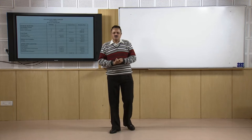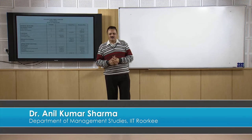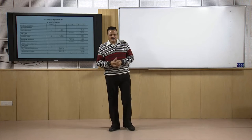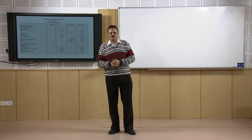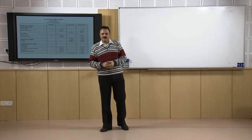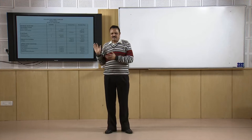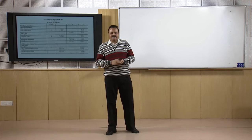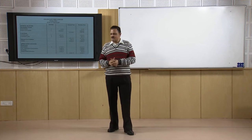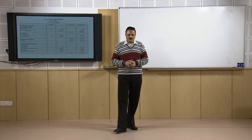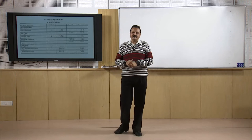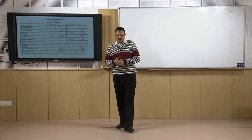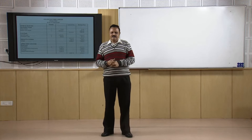Welcome students. In my previous lecture, we were talking about ratio analysis — analyzing financial statements with the help of ratios. So far we have discussed 5 ratios about Grasim Industries Limited: current ratio, quick ratio, super quick ratio, and two turnover ratios — debtors turnover ratio and creditors turnover ratio, meaning the debtors collection period and the creditors payment period. In these 5 ratios, we have seen that the liquidity position of this firm is very good — it is excellent and they are doing very well.